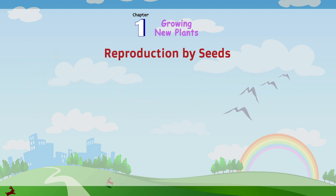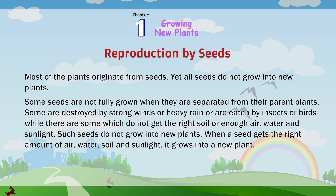Reproduction by seeds. Most of the plants originate from seeds. Yet, all seeds do not grow into new plants. Some seeds are not fully grown when they are separated from their parent plants. Some are destroyed by strong winds or heavy rain, or are eaten by insects or birds, while there are some which do not get the right soil or enough air. Such seeds do not grow into new plants.